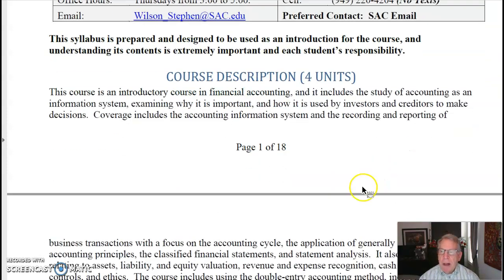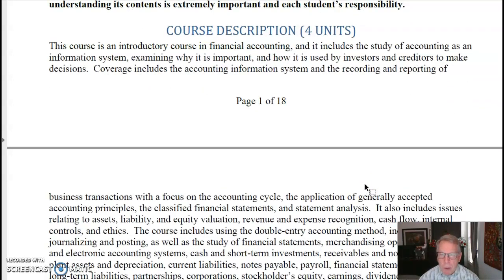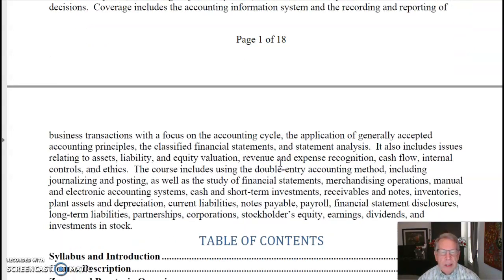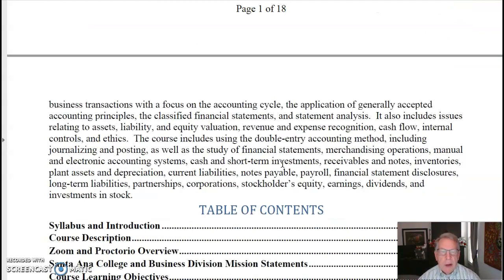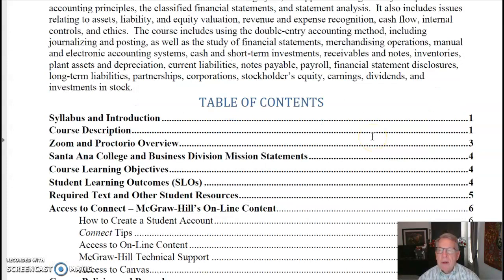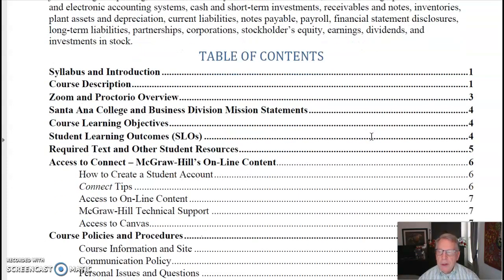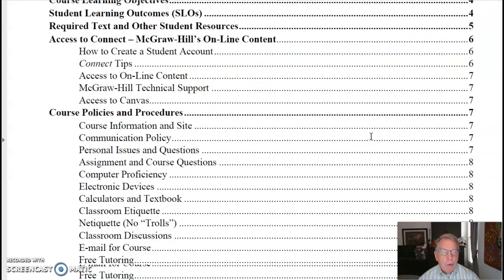It gives you a little bit about the course description — this is your first, introductory course in financial accounting. It includes many things as to how we develop numbers that are used for published financial statements. I won't read them to you; you can do that on your own. As this syllabus is a little bit long, I throw in a table of contents so that you can find things during the course a little easier.